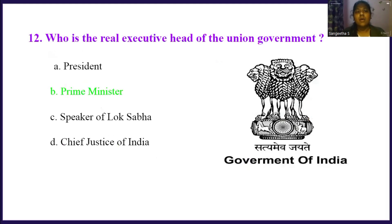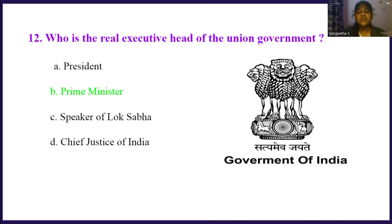Who is the real executive head of the union government? Option A, president. Option B, prime minister. Option C, speaker of Lok Sabha. Option D, chief justice of India. The right answer is option B, prime minister. The prime minister is the real executive head of the union government.